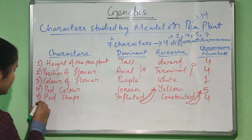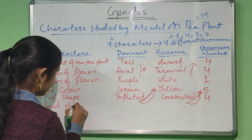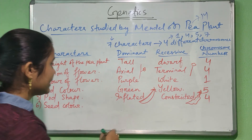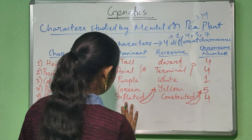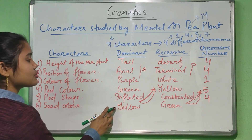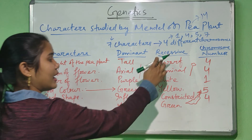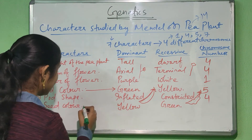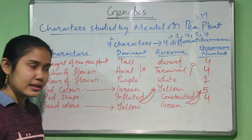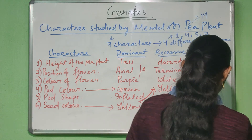The sixth character is the seed color. The seed can be yellow or green. Note that in pod color, the dominant is green, while in seed color, the dominant color is yellow and the recessive color is green. This character is located in chromosome number one.